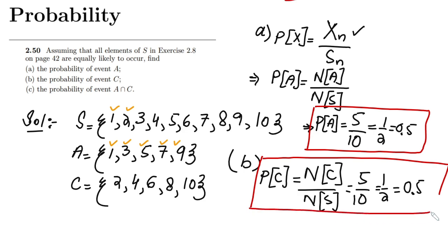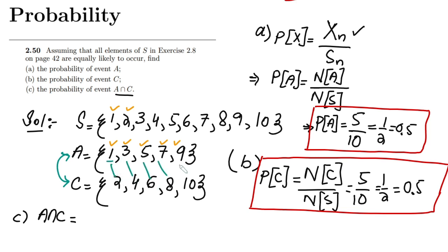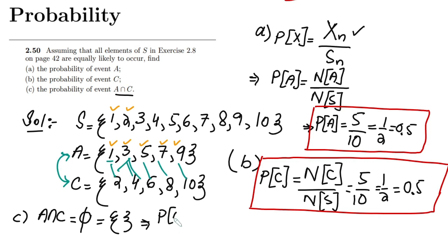Now in order to find the probability of A intersection C, I first need to find what A intersection C is. A intersection C contains the elements that are common between A and C. We can see that there is no element common between these two sets — A has odd numbers and C has even numbers. So A intersection C is the empty set, represented by phi or the empty set symbol.